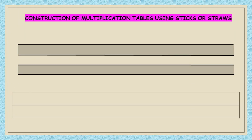Construction of multiplication tables using sticks and straws. To make a multiplication table of four, proceed as follows: take four sticks, broom sticks, or straws. Place them horizontally as shown. Place another stick on it vertically and mark the points where the vertical stick touches the other four sticks. This shows four horizontal sticks into one vertical stick — four into one is equal to four.